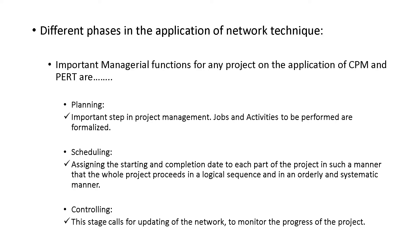Different phases in the application we have just discussed. That is planning is there, scheduling is there, controlling is there. You have to make the proper plan. Without plan you cannot do a project. It is not good to do a project without planning. So planning is the first step. You have to schedule how it is to be done. That is scheduling which is a starting date, what is a completion date and all, and what are the resources we have to use that is scheduling. And then after making everything you have to control it. You have to, this stage calls for updating of the network to monitor the progress of the project whether it is in the correct way or not. So if any fault is there make the modifications and then do the process.